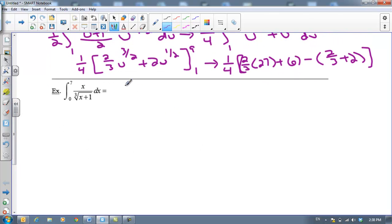Alright, let's take a look at another example. I'm going to rewrite this as the integral from 0 to 7 of x times (x + 1) to the -1/3 power. So we'll let u equal x plus 1, and let's go ahead and solve that for x, because I see I'm going to need that here. So u minus 1 is equal to x, and then du/dx is equal to 1, which means that du and dx are exactly equal to each other.